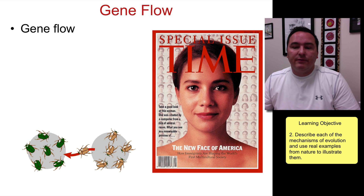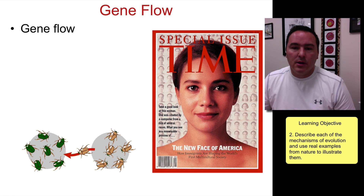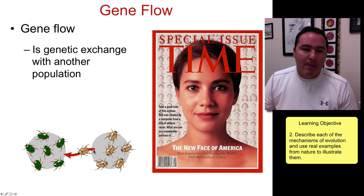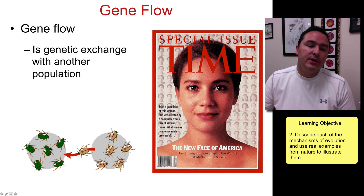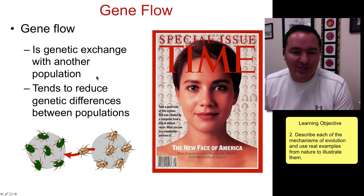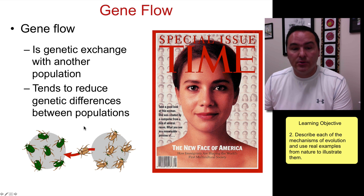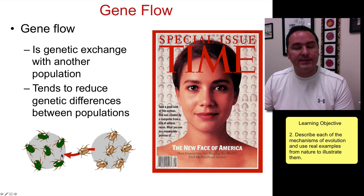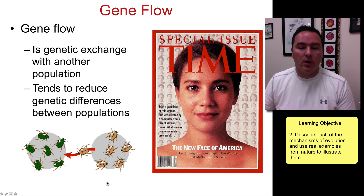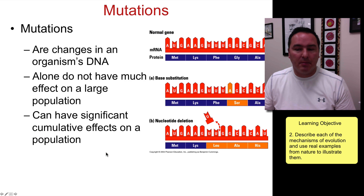The next mechanism is gene flow — the migration of one or more individuals from one population to another population of the same species, resulting in genetic exchange. This tends to reduce the differences between populations, but it increases the genetic diversity within a population.